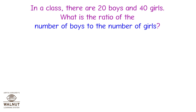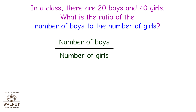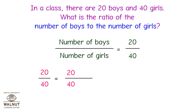In a class, there are 20 boys and 40 girls. What is the ratio of the number of boys to the number of girls? First, we will write the ratio to be found out as a fraction. We can keep reducing this fraction as long as there are common factors. We divide the numerator and denominator by 10 and we get 2 upon 4.